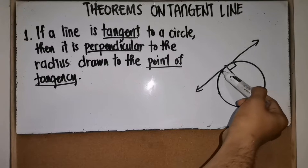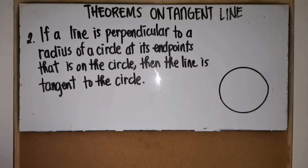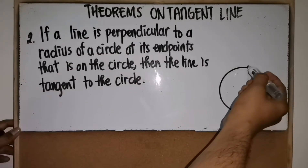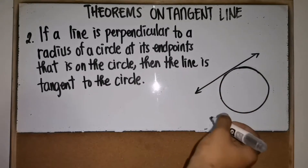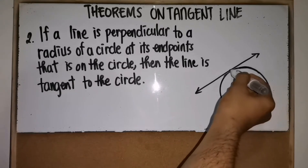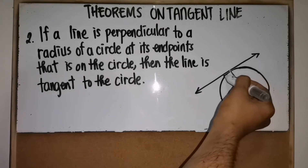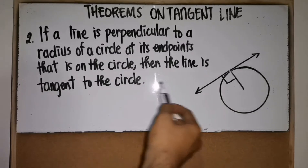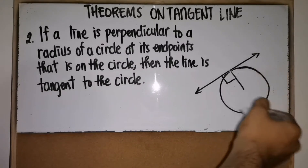Theorem two: if a line is perpendicular to a radius of a circle at its endpoint that is on the circle, then the line is tangent to the circle. This is the reverse of theorem one. So if a line is perpendicular to the radius — meaning it forms a right angle — then we can conclude that the line is tangent to the circle.